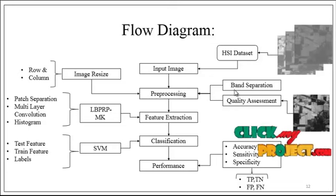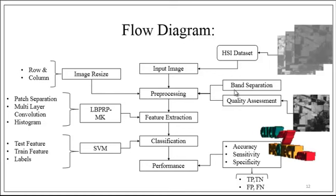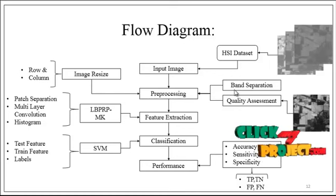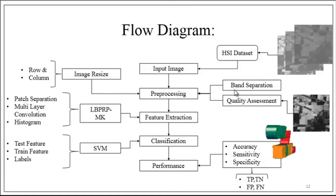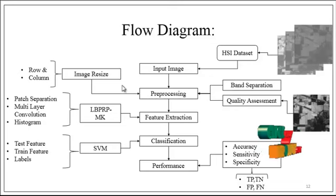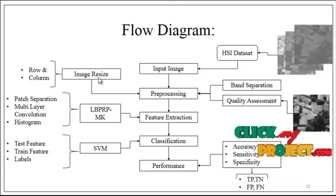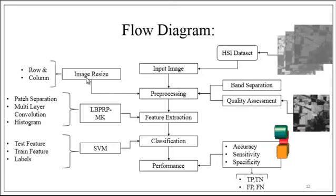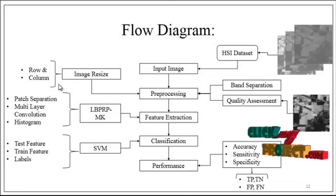The hyperspectral image consists of several bands. For example, when taking any one hyperspectral image, it may consist of 50 bands, 100 bands, and so on. So we have to separate each and every band separately. After separating the bands, we go for the image resize for better aspect ratios, resizing the rows and columns into an aspect ratio.